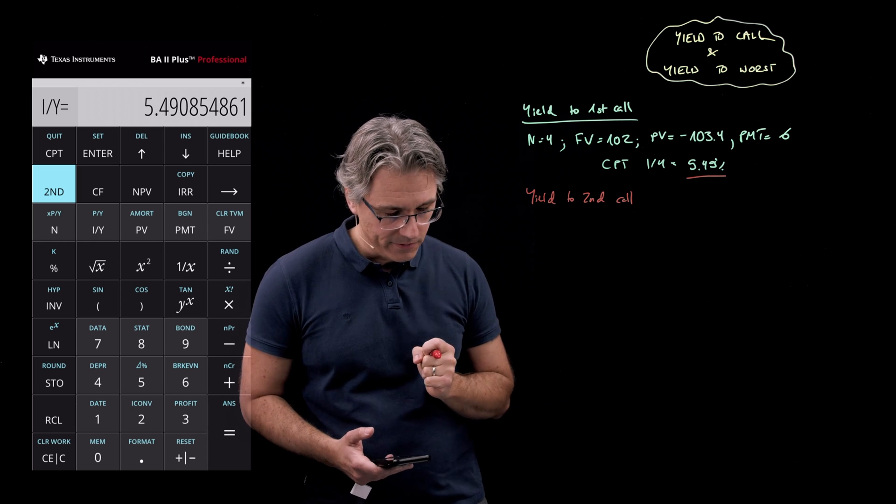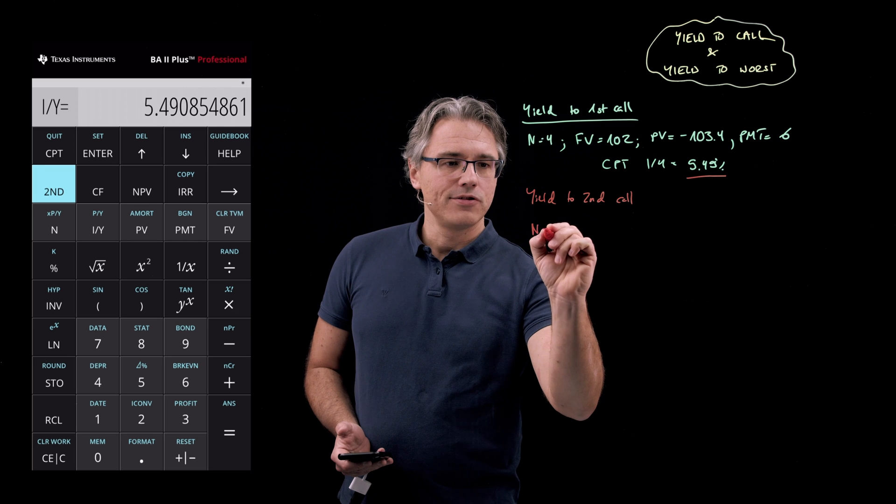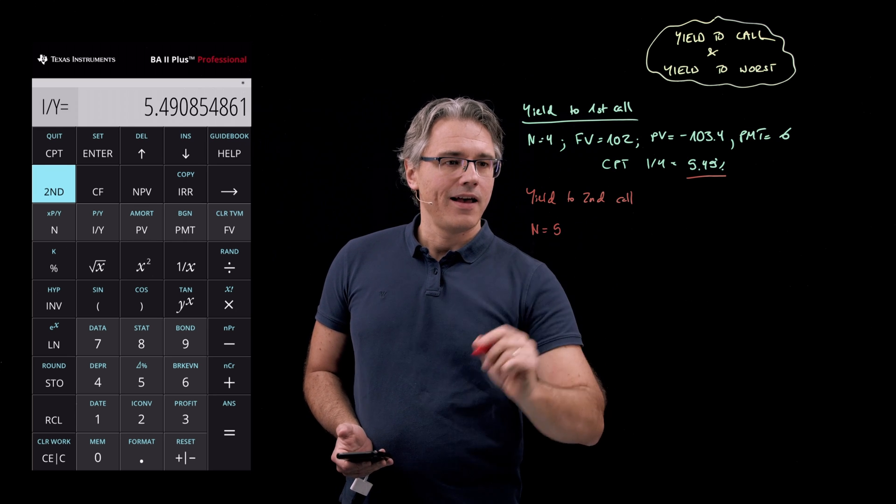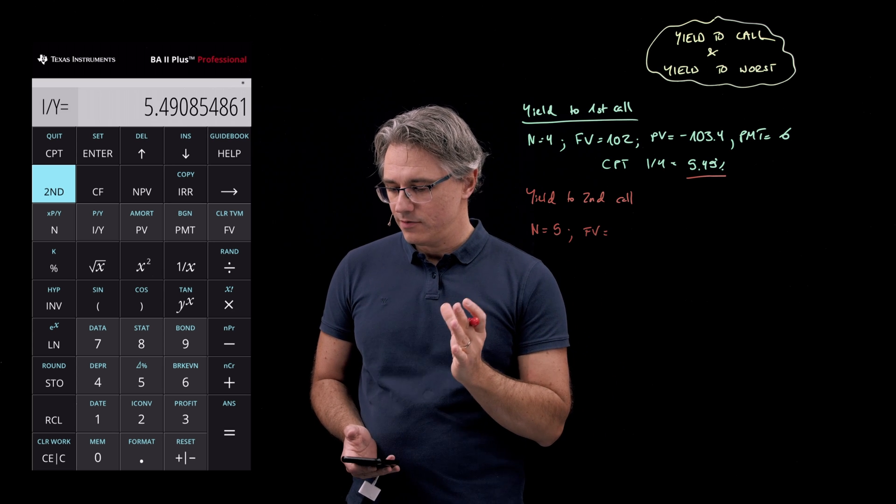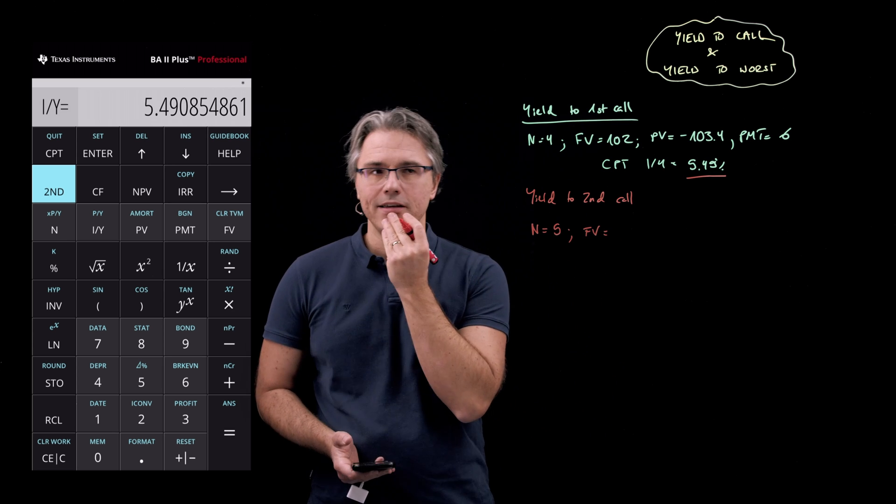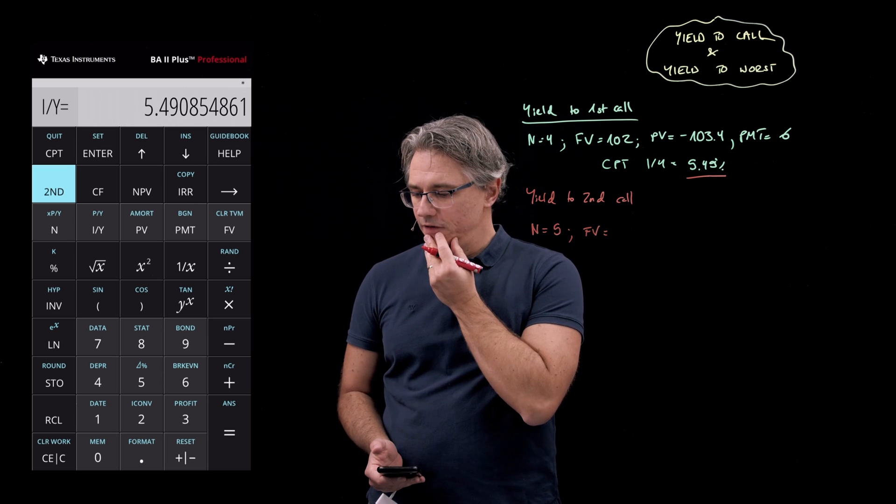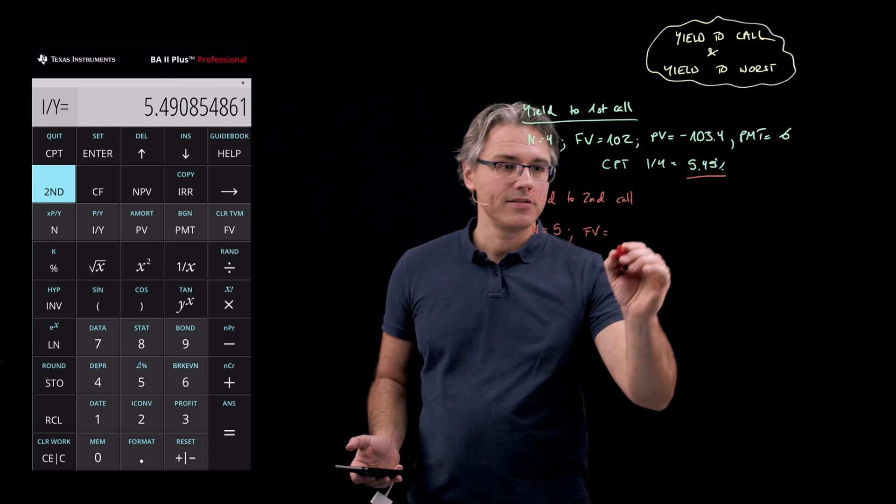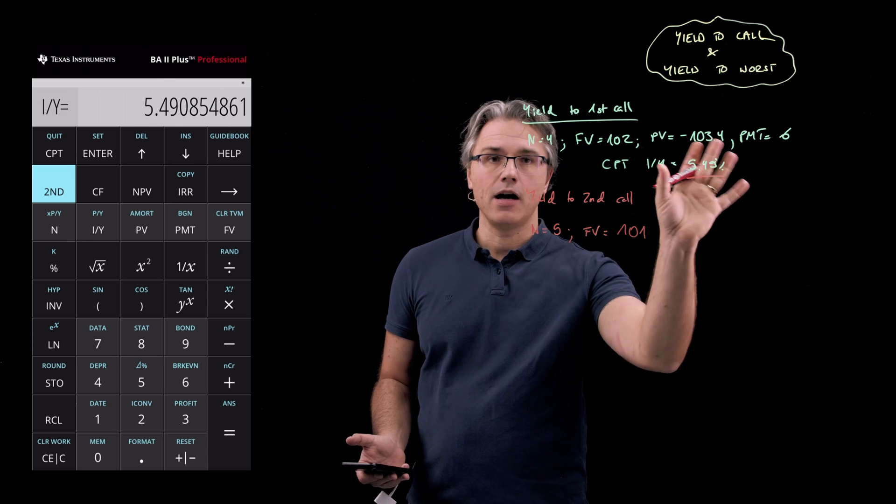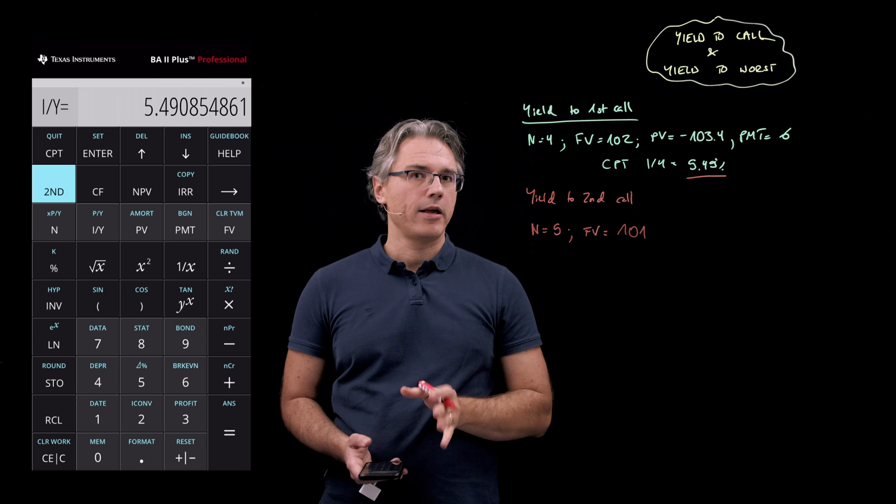So yield to second call: what we're going to do is just substitute N for five and we're going to have a different FV, so no longer 102. Because the call schedule tells us that if the bond is called at the end of the fifth year, the call price is going to be 101. So I'm going to have 101 over here. Other than that I'm going to keep all the other parameters the same.